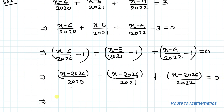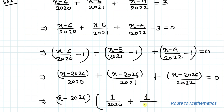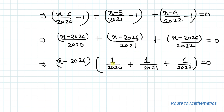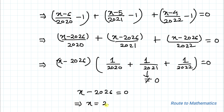In the next step we take out the common factor (x minus 2026), giving: (x minus 2026) times (1/2020 plus 1/2021 plus 1/2022) equals 0. Since the value of 1/2020 plus 1/2021 plus 1/2022 cannot equal zero, in order to satisfy the equation, x minus 2026 must equal 0. Therefore x equals 2026 is our answer.